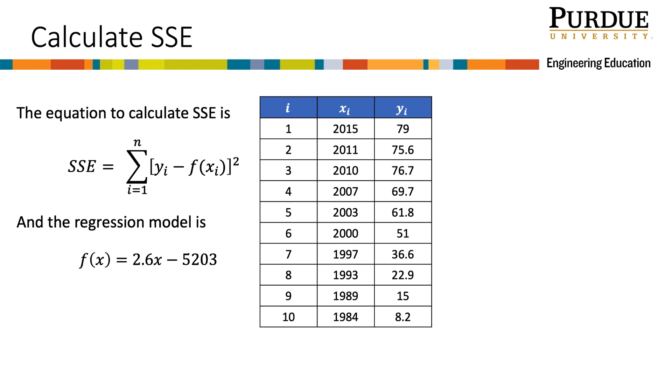Looking at the equation for SSE, I can see that I need y sub i, which I already have in the table, and I also need the f of x sub i, which are the modeled y values. I will create a column for the f of x sub i's and calculate each of them. The f of x sub i takes 2015 and plugs it in for our x in the modeled line, multiplies that by the slope, 2.6, and subtracts 5,203, giving me 86.7. I repeat this for all other x sub i's.